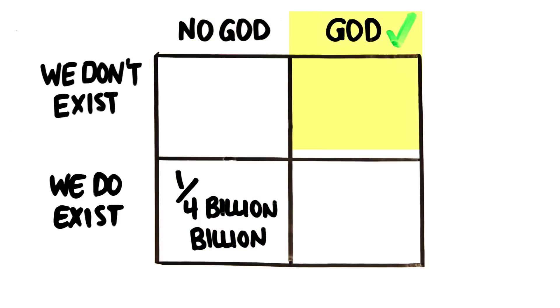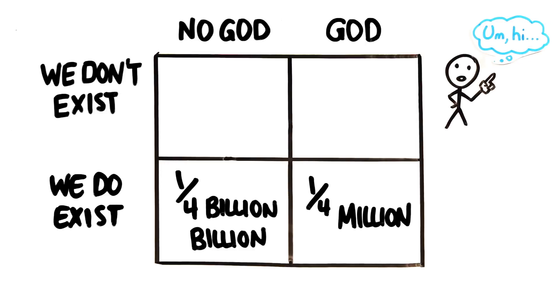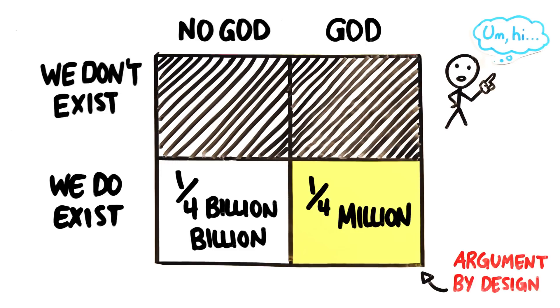And if God is real, even though we don't know that God would make humans, certainly he could, so let's give it a higher probability of 1 in 4 million. Of course, if we examine the evidence, we know we exist so we can get rid of the other row. And as many who have used the argument by design point out, a human-made world with God seems much, much more likely rationally and statistically.